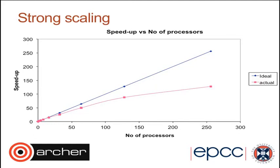Here's an example graph of strong scaling. On the y-axis we have the speed-up and on the x-axis the number of processors. You see two curves: the ideal curve is a straight line where x equals y — if you have twice as many processors working on the same problem, you'd expect twice the speed-up. But typically with strong scaling, the performance tails off. Around 256 processors, the speed-up is only about 128, giving around 50% parallel efficiency. So it really doesn't seem worth scaling beyond 256 processors.